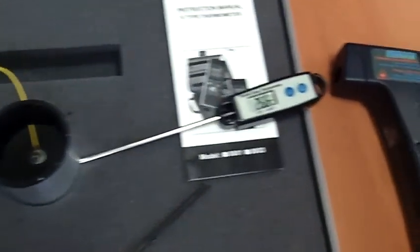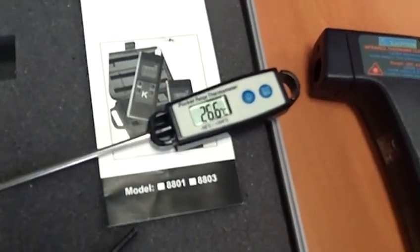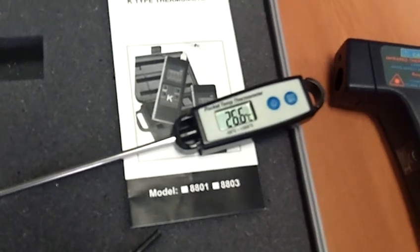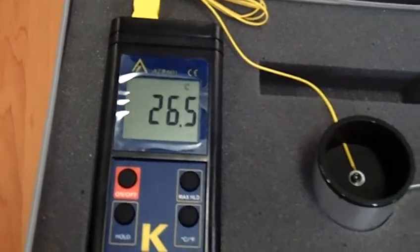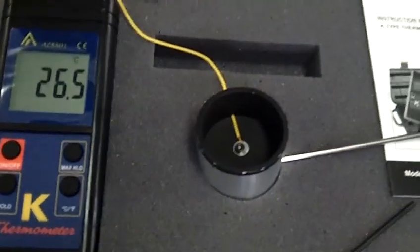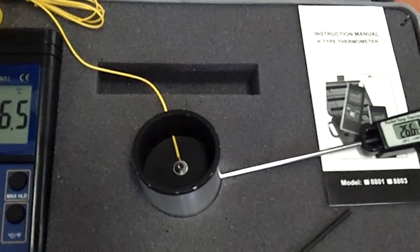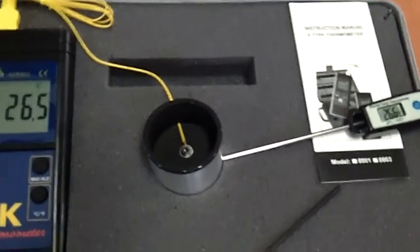Now if we look at the probe thermometer that's been put in, it has a reading of 26.6 against the master unit's calibration temperature of 26.5. It's within 0.1 of a degree, so it's very accurate and well within the standards. Both of those units have been calibrated.